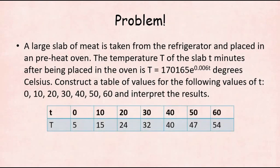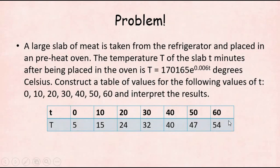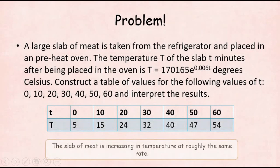Results: when t = 0, T = 5°C; t = 10, T = 15°C; t = 20, T = 24°C; t = 30, T = 32°C; t = 40, T = 40°C; t = 50, T = 47°C; t = 60, T = 54°C. The slab of meat is increasing in temperature at roughly the same rate.